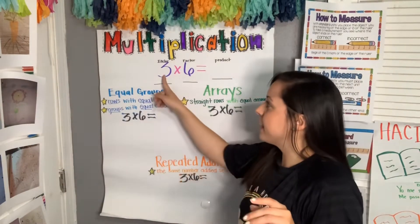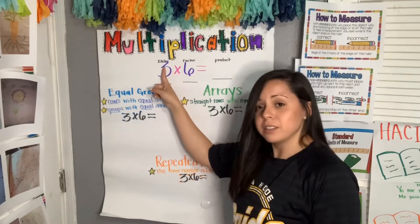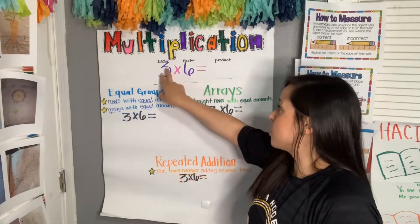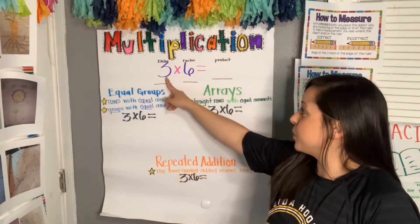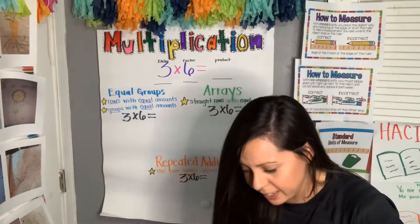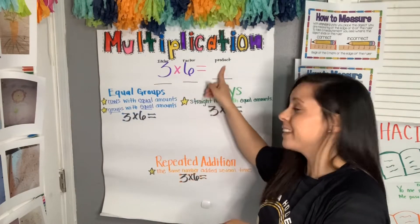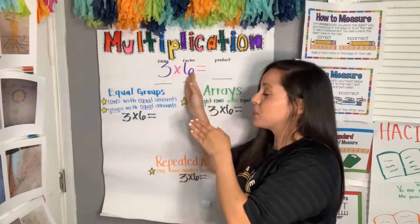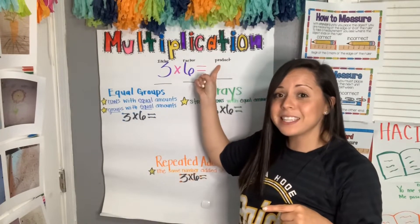Let's review some vocabulary. In a multiplication number sentence, we have two factors — the first factor and the second factor. The numbers that are being multiplied are called factors. The answer we get after we multiply is called the product. So the numbers being multiplied are the factors, and the answer after we multiply is the product.